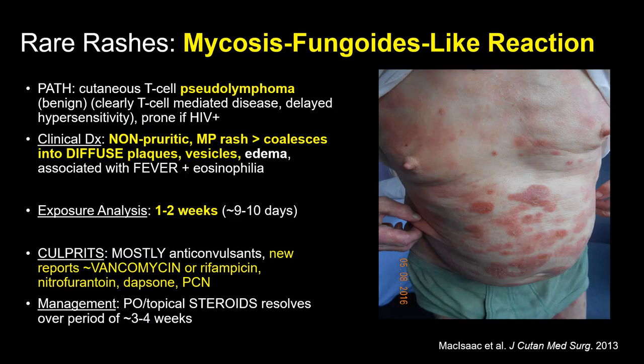Lastly, the extremely rare mycosis fungoides-like reaction involves a rash mimicking cutaneous T-cell lymphoma — coined a pseudolymphoma — benign and characteristic in HIV-positive patients. The rash appears weeks after starting the agent as a non-pruritic maculopapular rash that evolves and coalesces into diffuse erythematous plaques and vesicles. It can be associated with fever and eosinophilia but is otherwise non-life threatening. It is classically associated with anticonvulsants, namely phenytoin, but has also been associated with vancomycin, rifampin, rarely some beta-lactams, dapsone, and nitrofurantoin. It has been known to resolve over three to four weeks with oral steroids and drug discontinuation.